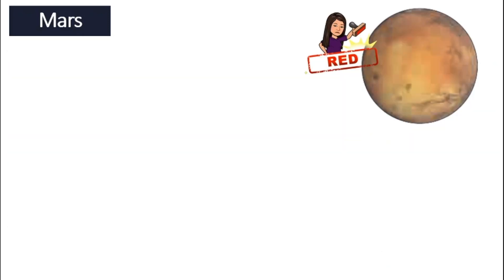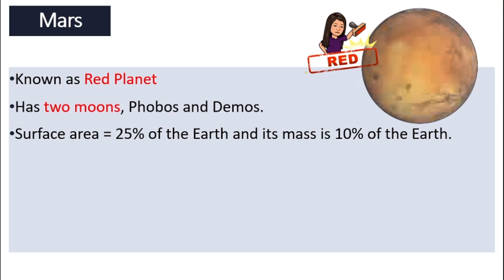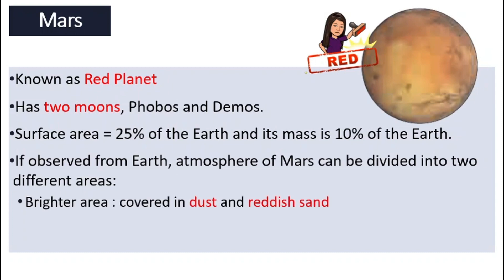Let's get on our rocket and go to Mars. Mars is also known as the red planet because it appears red. Mars has two moons — the Earth only has one, and Mercury and Venus do not have any. Mars has two, and their names are Phobos and Deimos. The surface area is only about 25% of the Earth and its mass is only 10% of the Earth. If we observe Mars from the Earth, one area is covered in dust and reddish sand, which is why it appears red to us.